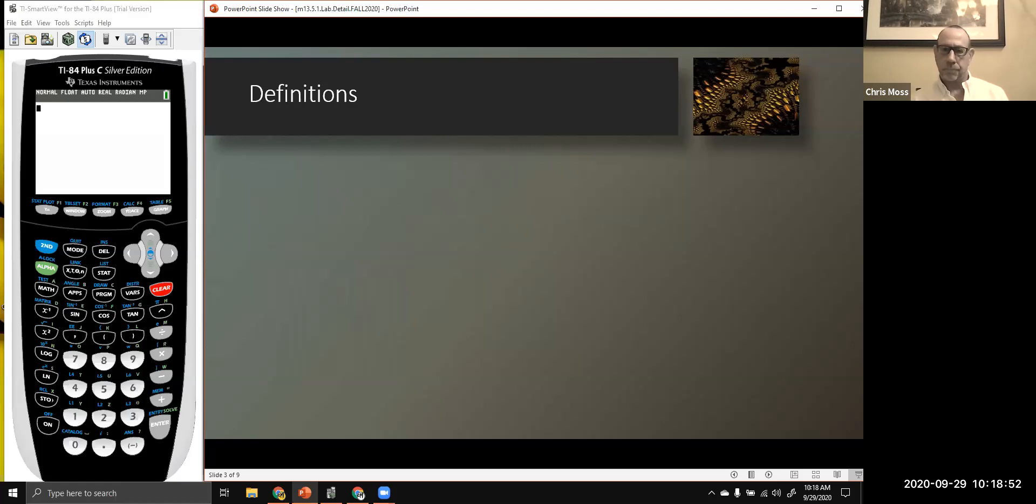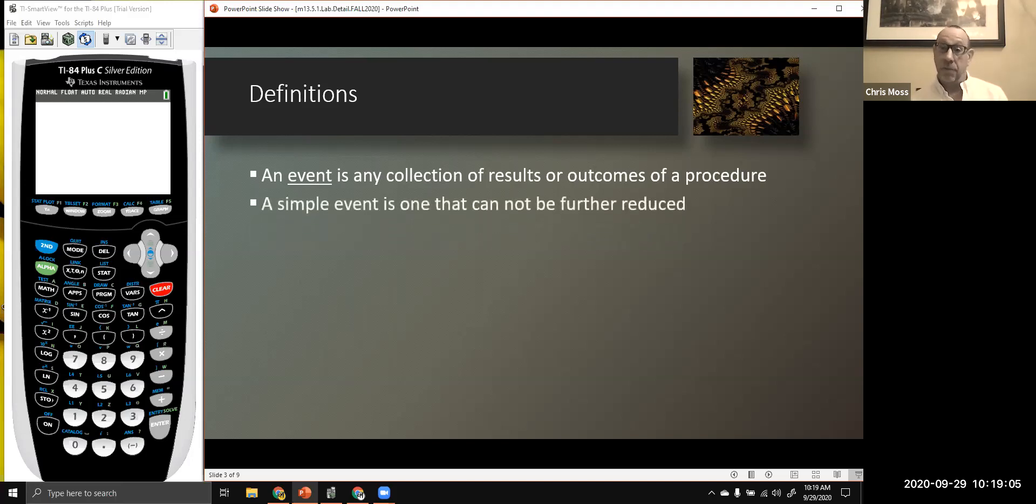So definitions. I'll remind people that an event is any collection of results or outcomes of a procedure, such as the outcome when you flip a coin or have a baby.